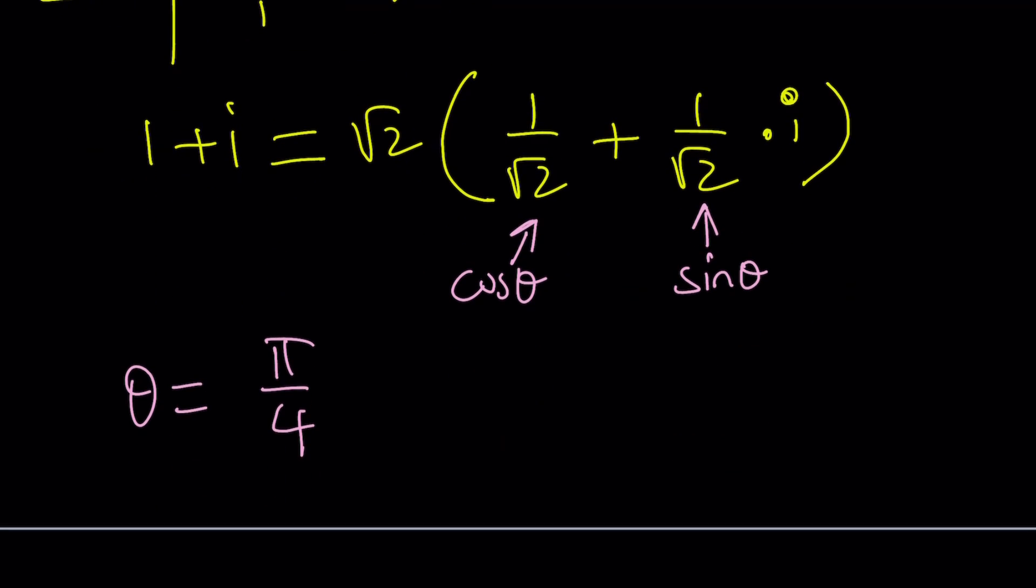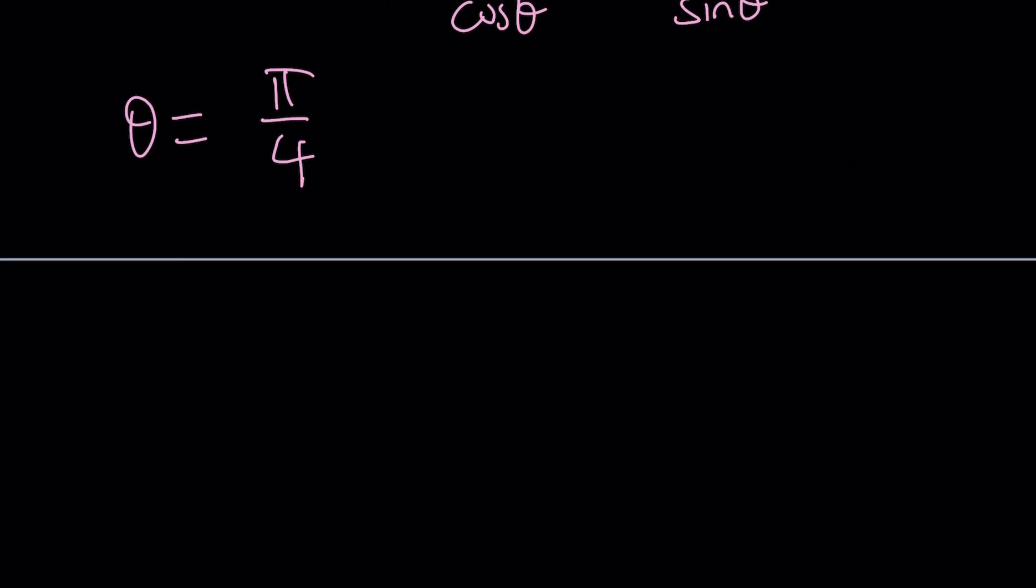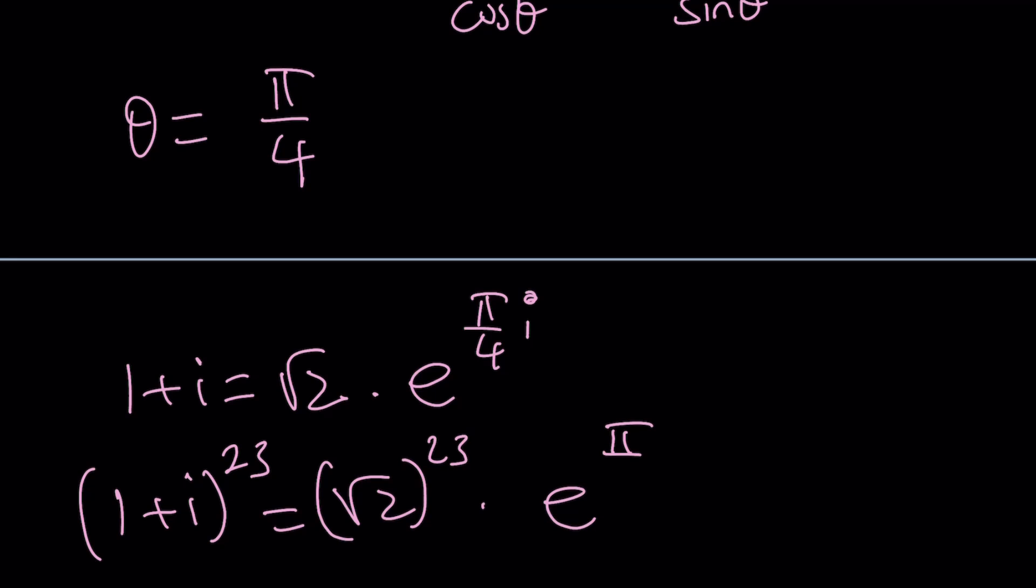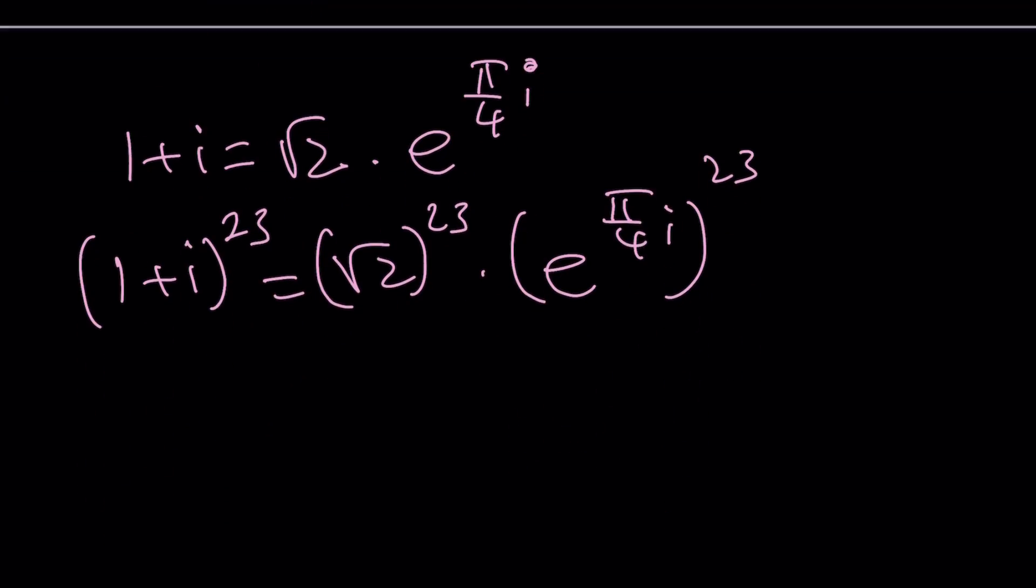Great. So let's go ahead and simplify this. I'm going to be able to write 1 plus i as root 2 times e to the power pi over 4i. Now, I'm going to go ahead and raise it to the power 23. That means raise this to the power 23, and raise this to the power 23.